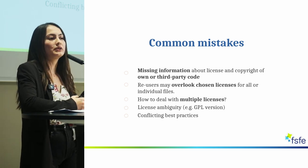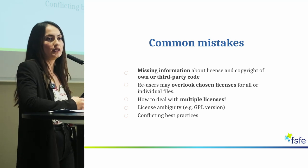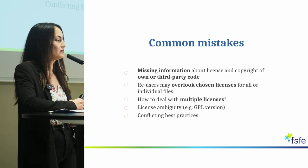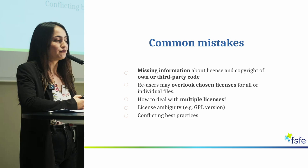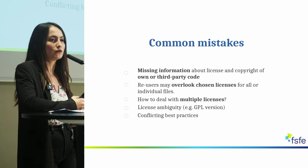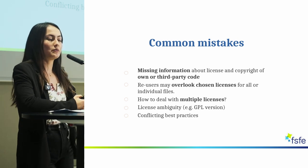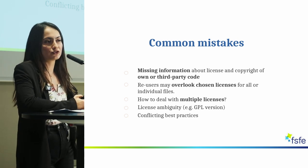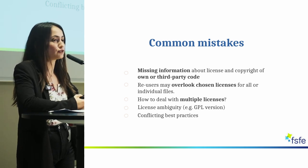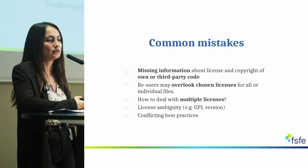I would like to talk a little bit about the common mistakes that we have seen so far — the state of play of how projects actually declare licensing and copyright information at the moment. We have noticed that there is definitely missing information about license and copyright of own or third-party code, and this is connected with the second issue which is that re-users may overlook this legal information. We have already seen that licenses and copyright are important, and if you overlook this information you might incur some legal issues as well.